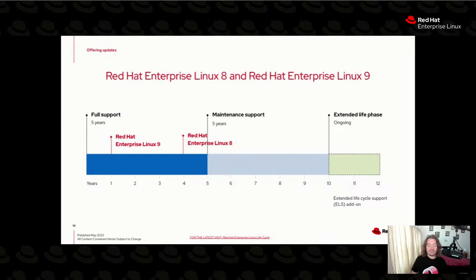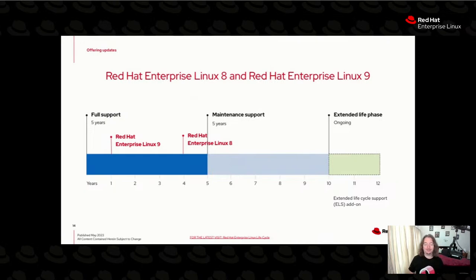We also went to a predictable release cadence — three years between major versions. RHEL 8 is now four years old, RHEL 9 is one year old, and you heard it here first: I can pretty well tell you that by this time two years from now, we'll be running on RHEL 10.0. Actually, tell everyone — we've moved to that predictable release cadence.